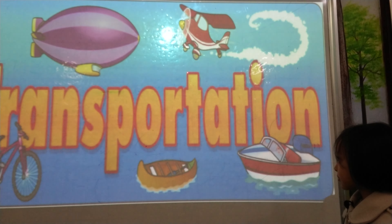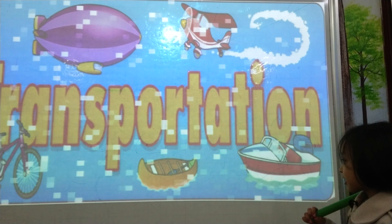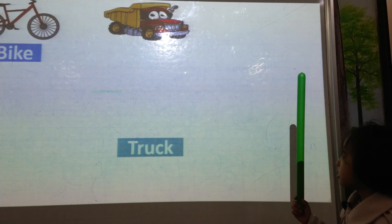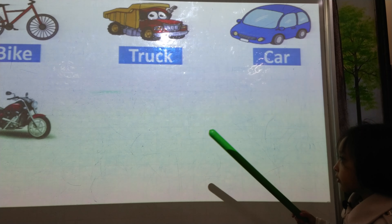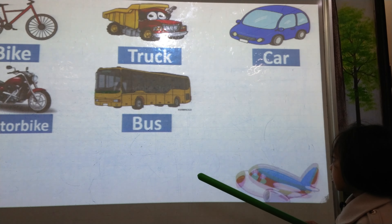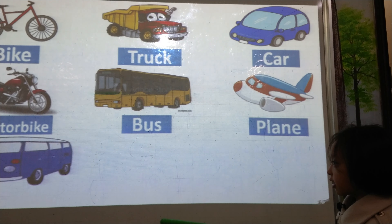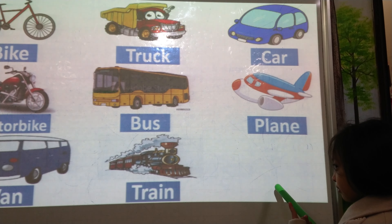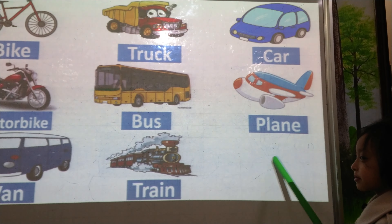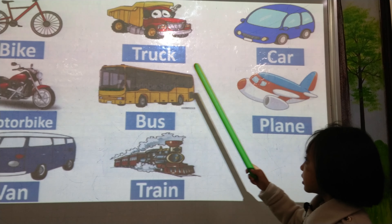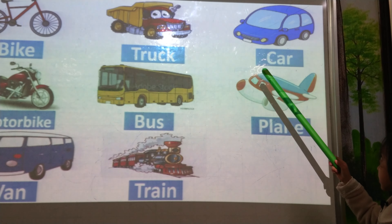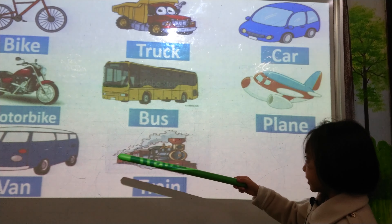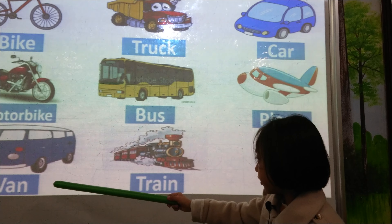Now, let's receive here our children's relation. Are you ready? Yes. Okay. Now, let's start here. What is it? Bike. Truck. Truck. Car. Motorbike. Bus. Train. Van. Train. Very good. Now, use it in a sentence. It's a bike. Come again. It's a bike. It's a truck. It's a car. It's a motorbike. It's a bus. It's a plane. It's a van. It's a train.